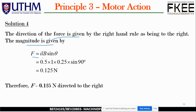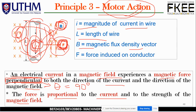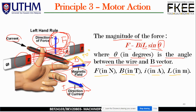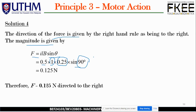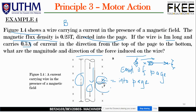Solution: The direction of force is given by the right-hand rule as being directed to the right. The magnitude is calculated as F = I·L·B·sinθ: I = 0.5 A, L = 1 meter, B = 0.25 Tesla, and sinθ = sin90° = 1, since all elements are perpendicular. Therefore F = 0.125 Newtons, directed to the right.